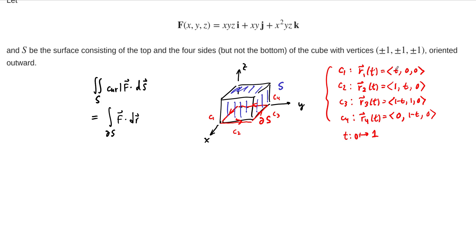These are the four component functions of our curve. Notice that on R1, when x is t, y and z are both 0. So now let's look at our vector field along each one of these curves.